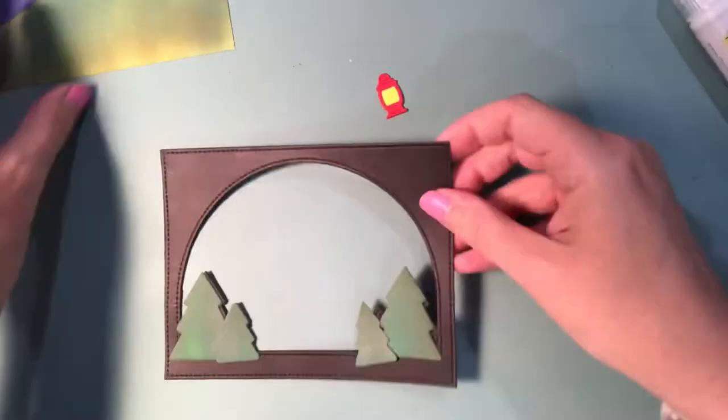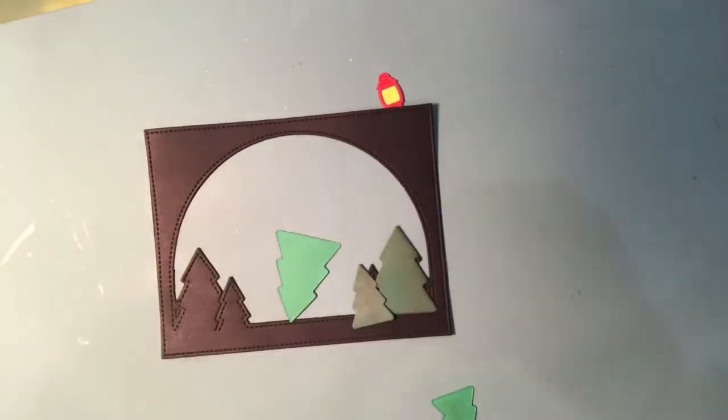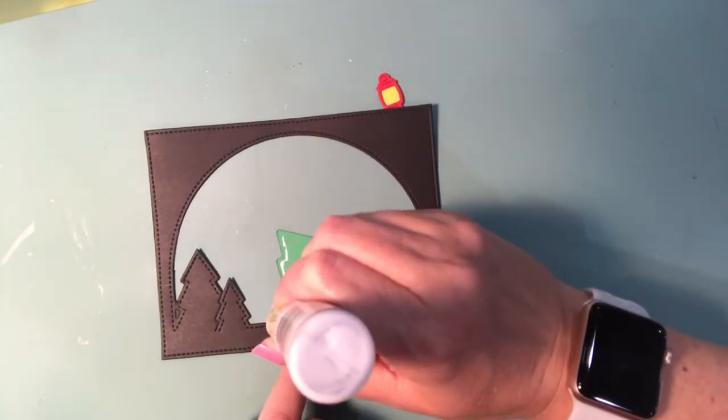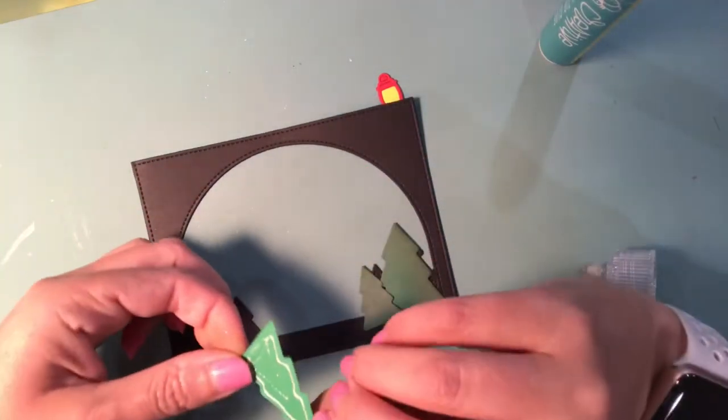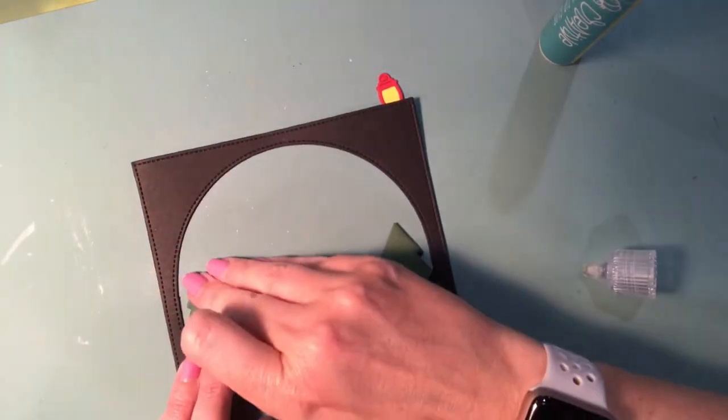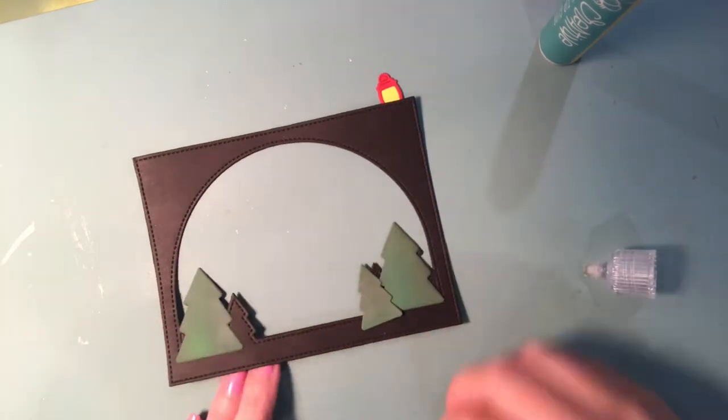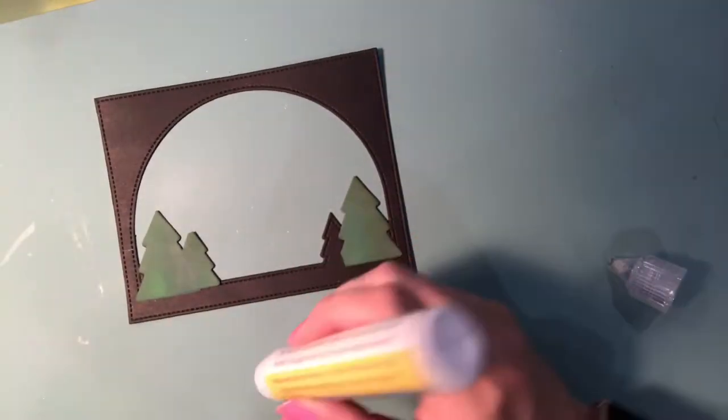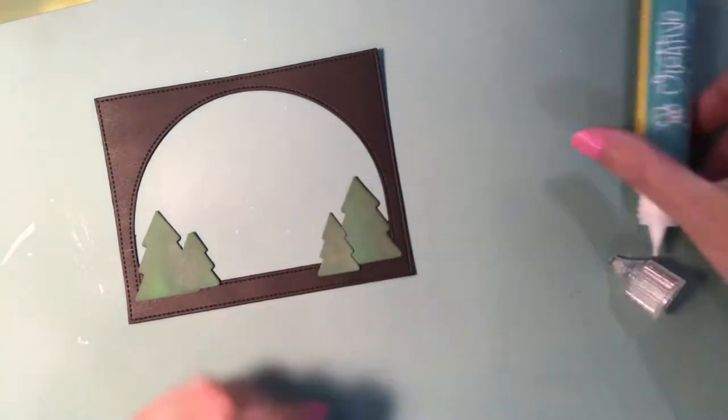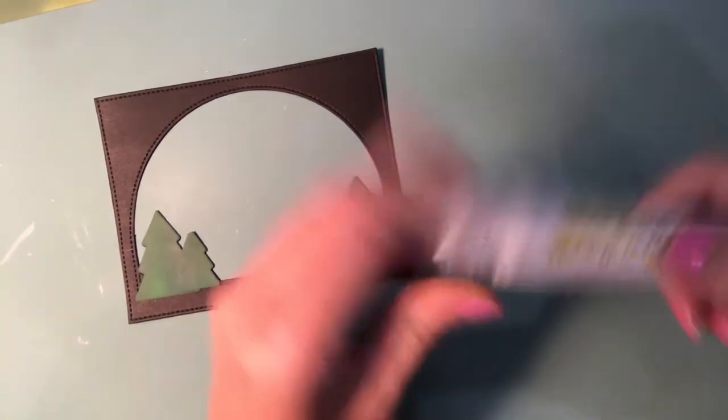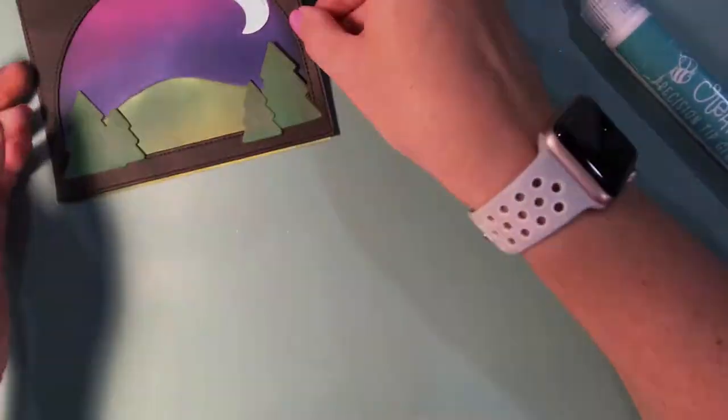I'm going to put that to the side and start assembling the front of the card. I'm using my Be Creative HoneyBee glue to glue all of these trees down. They fit perfectly on top of here, so you can either use them by themselves or create depth and dimension with this. You can do some of them popped up, some of them back. There's so many different things you can do with this scene.